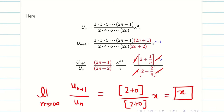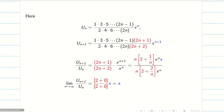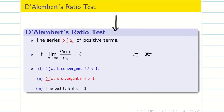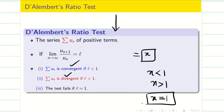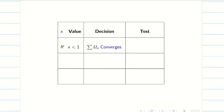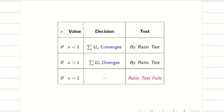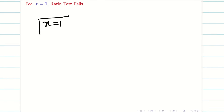Since the question states x > 0, applying ratio test: if x < 1, summation un converges by ratio test; if x > 1, summation un diverges by ratio test; if x = 1, ratio test fails and we cannot draw a conclusion. So at x = 1, ratio test fails, and therefore we must go for Raabe's test.